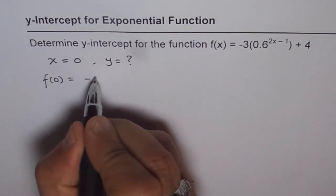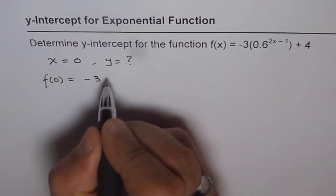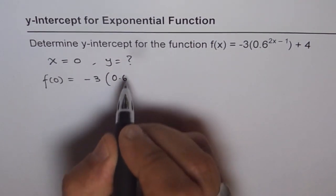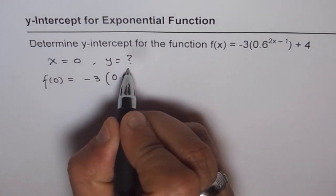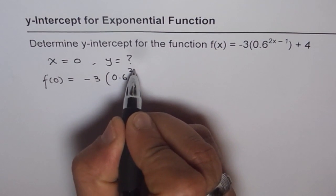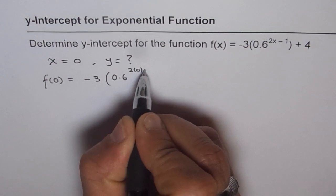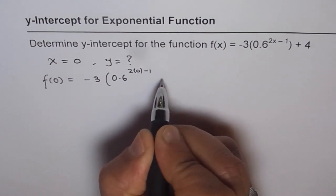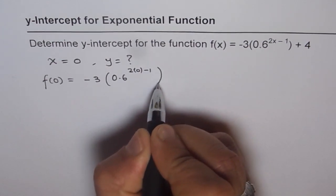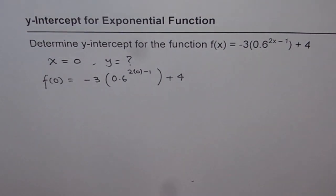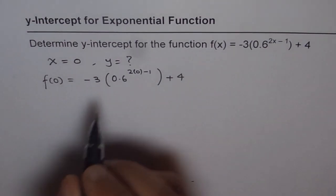So f(0) is: minus 3 times 0.6 to the power of 2 times 0, minus 1, plus 4. Substituting x = 0 will give us the y-intercept.